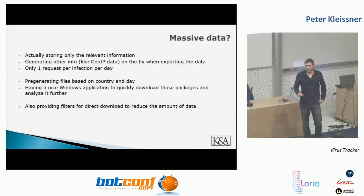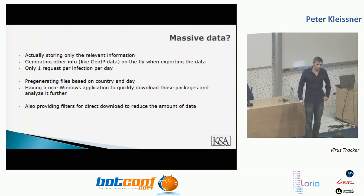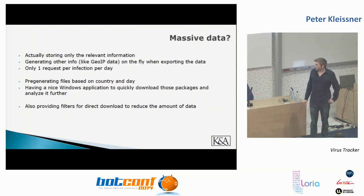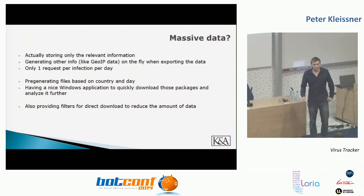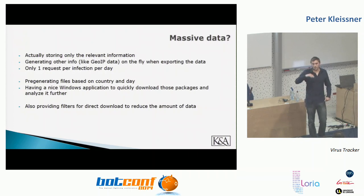We're also building historical GeoIP databases to have accurate location information, because over two years many IP ranges have been reassigned. We have filters so you can download data for your ASN or IP range, set alerts to receive SMS in real-time for new infections, and we've developed an application to download and manually inspect the data.